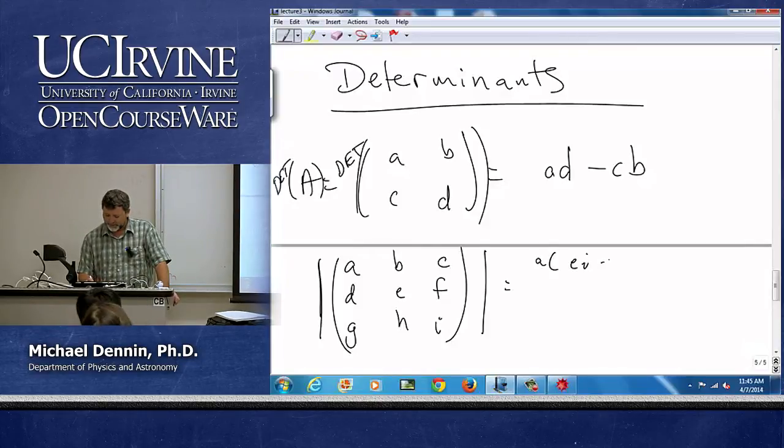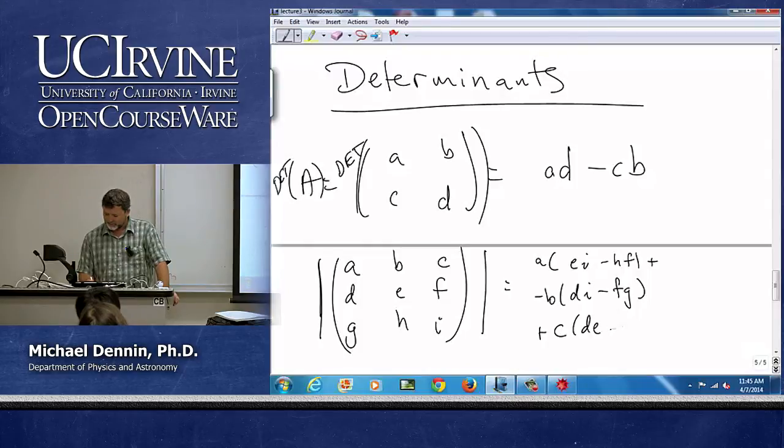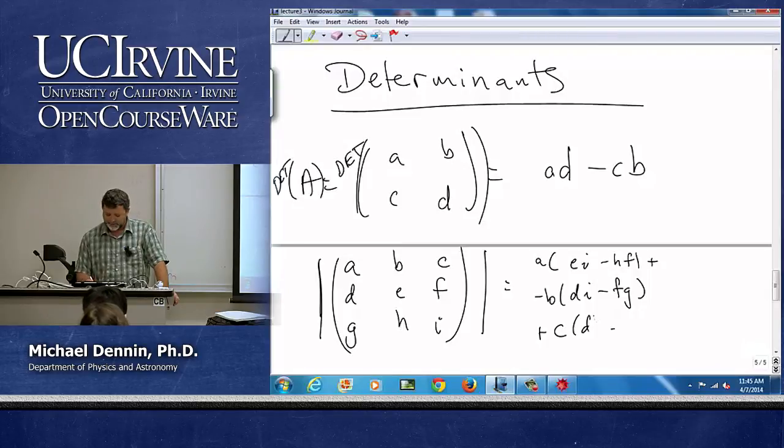Right, so e times that plus, well I like to do minus b so I can keep track of things, di minus fg and then plus c, de minus gh, did I do that right? No I didn't. Yeah, I had trouble writing again, dh minus ge.